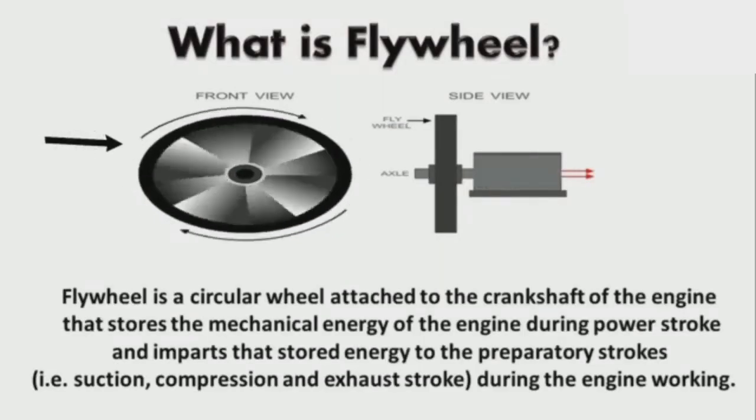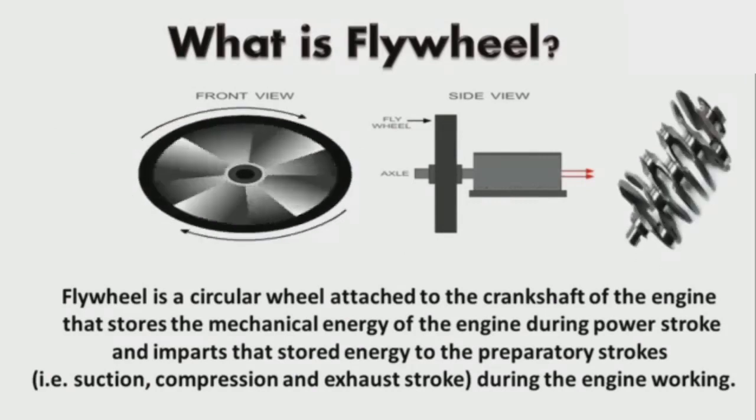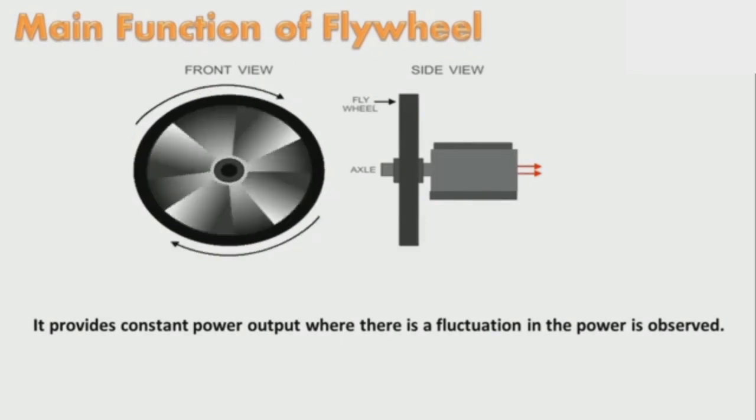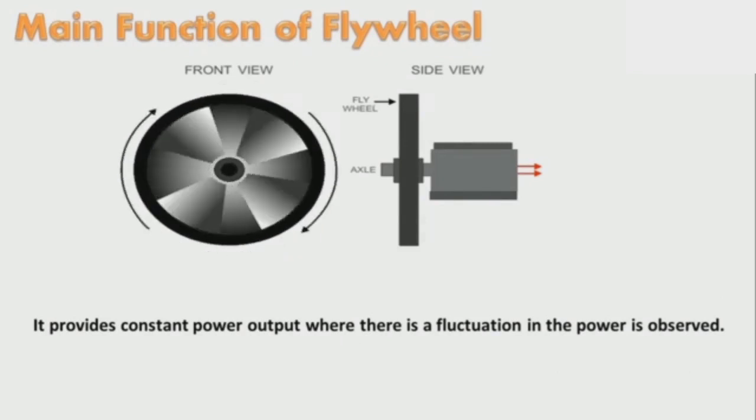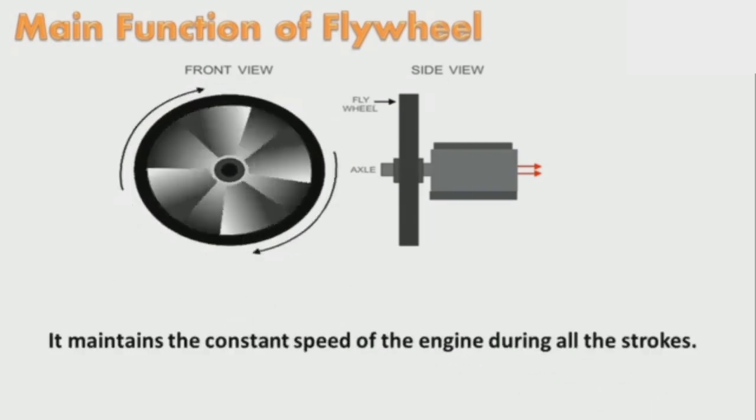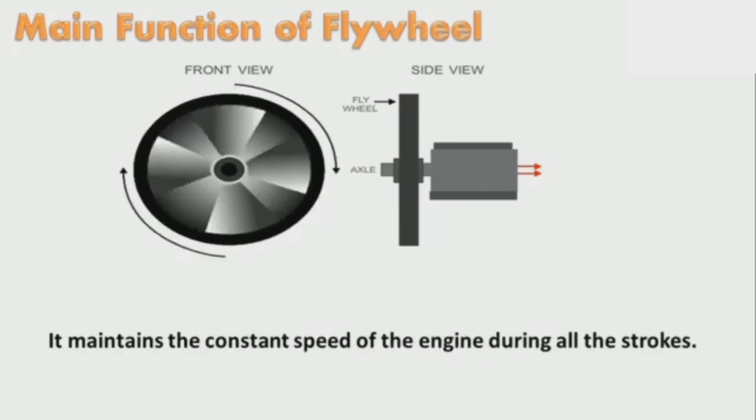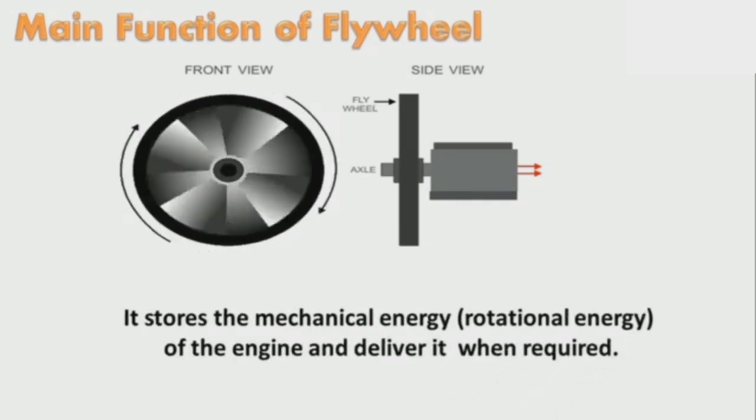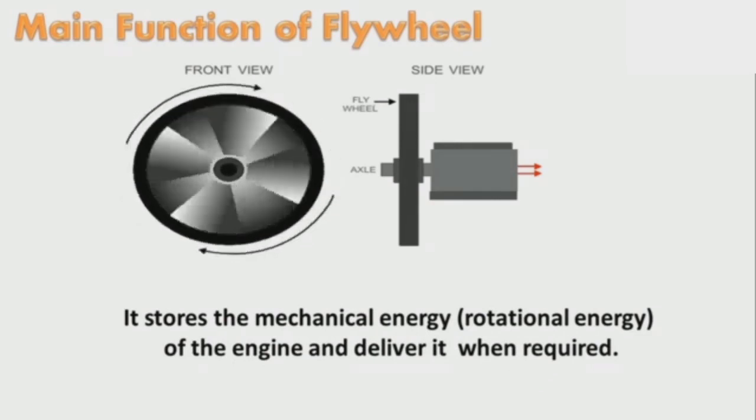Then the next machine element is the flywheel. The flywheel is a heavy wheel attached to a rotating shaft so as to smooth out delivery of power from a motor to a machine. The inertia of the flywheel opposes and moderates fluctuation in the speed of the engine and stores the excess energy for intermittent use. When the energy is accessed in the power stroke, it stores the energy. And when the energy is not produced by the engine, it releases the energy.